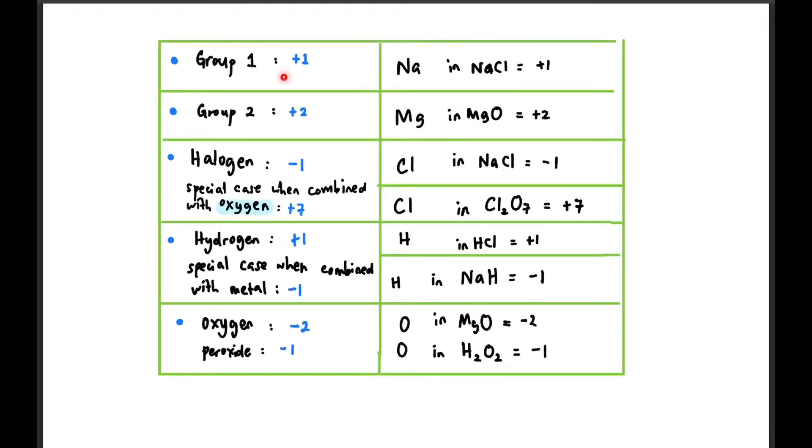For example, these are the summary: Group 1 is always +1, Group 2 is +2, halogen is -1 most of the time but it's special when combined with oxygen it will become +7. Hydrogen is +1 in most cases, but in some cases it's -1 if combined with metal, in that case it's called hydride. In most cases oxygen is -2, but if it's peroxide it's -1.